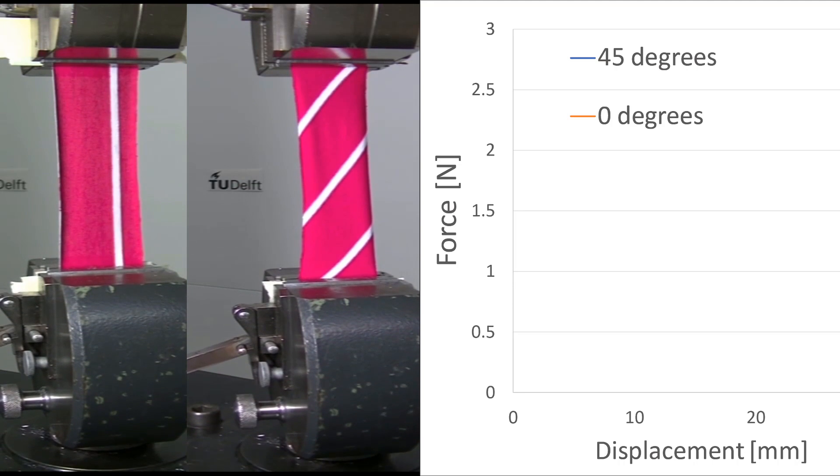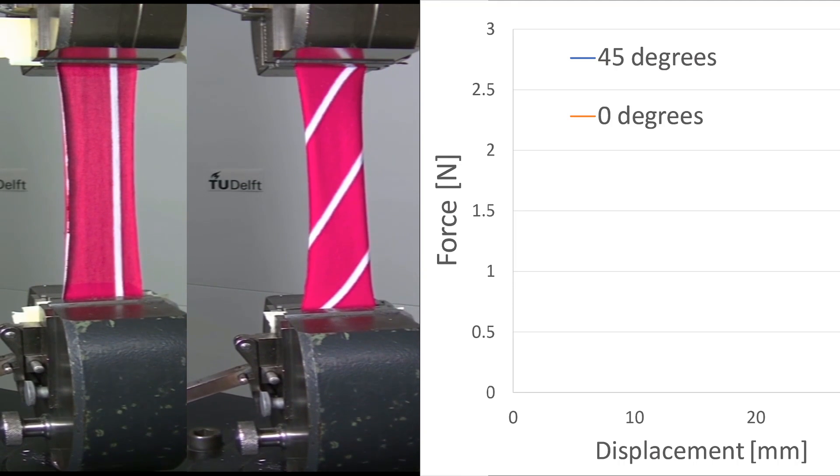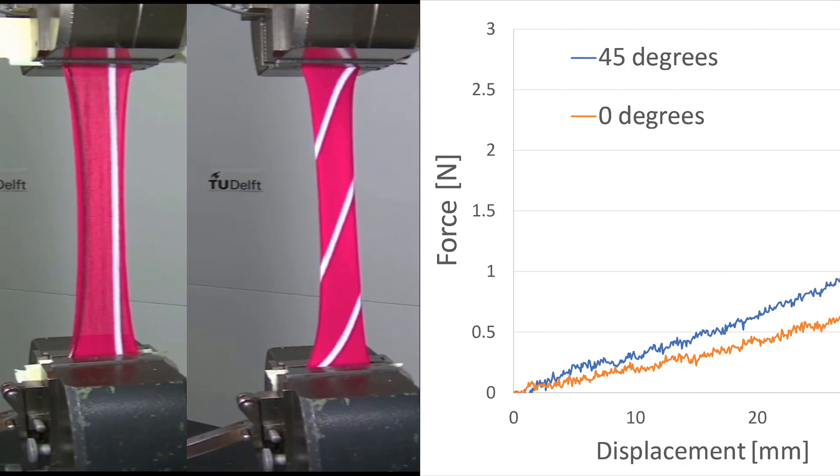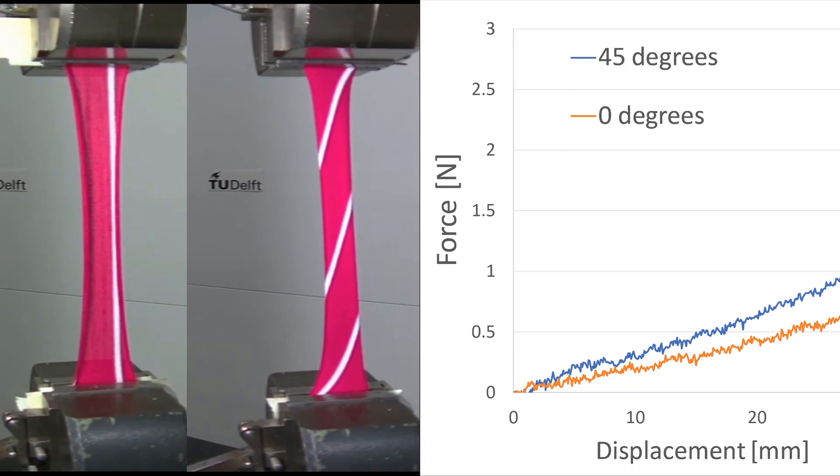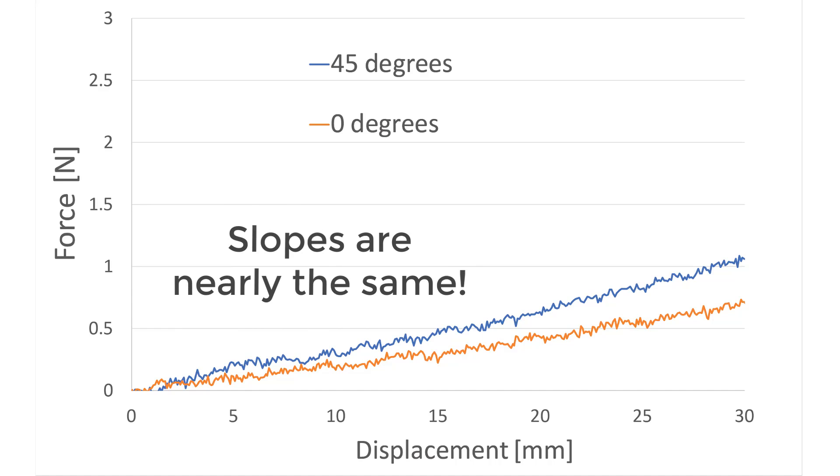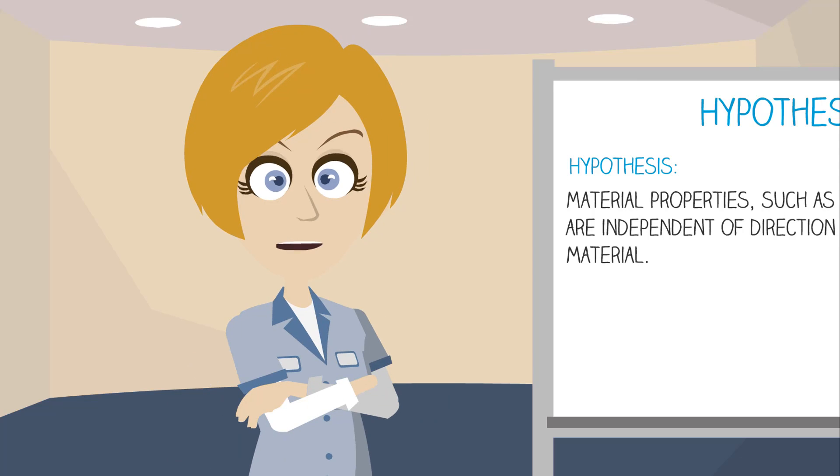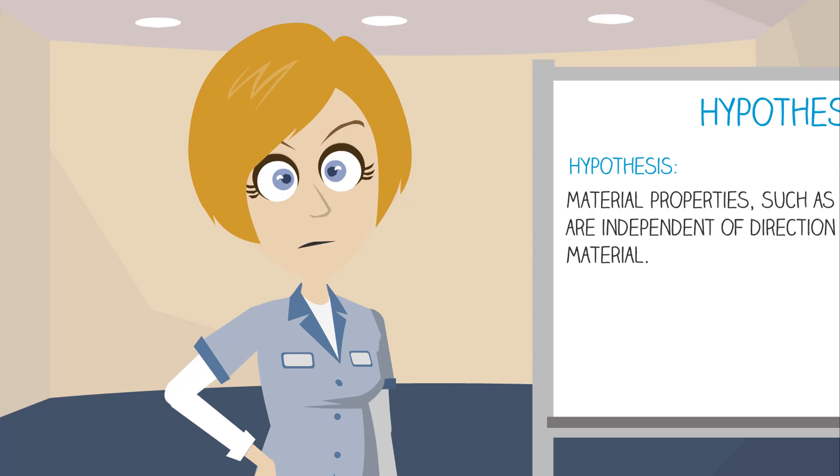Here you can see the footage of the t-shirt material side by side. As the test progresses, you can also see the force deflection curve being generated by the test setup. So what do we see? It seems that the slopes of the two curves are nearly the same. So this material is, in fact, supporting our hypothesis. But we shouldn't get too excited yet. The behavior of one material does not necessarily represent the behavior of all materials. So let's test our second material.